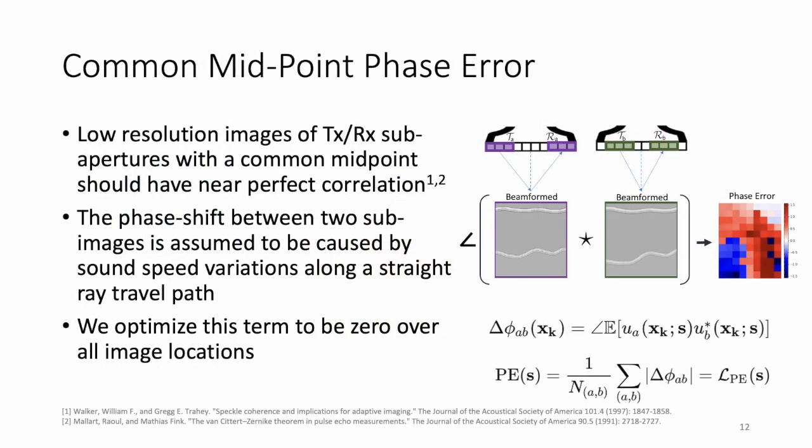In accordance with the van Cittert-Zernike theorem, low-resolution images created from transmit-receive sub-aperture pairs with a common midpoint should have near-perfect correlation given the Fraunhofer approximation. A shift in phase between the spatially resolved signals of sub-aperture images is assumed to be caused by sound speed variations along the straight-ray travel paths. We optimize this term to be zero over all image locations.